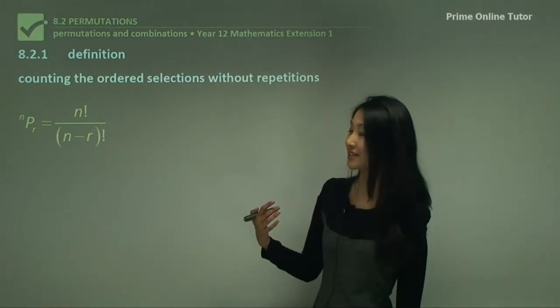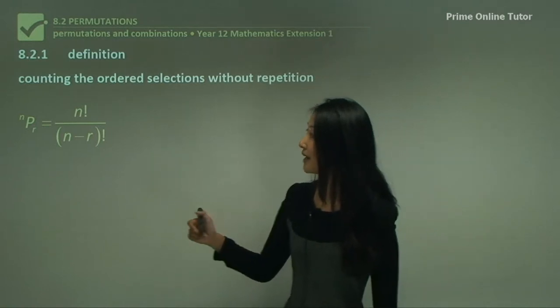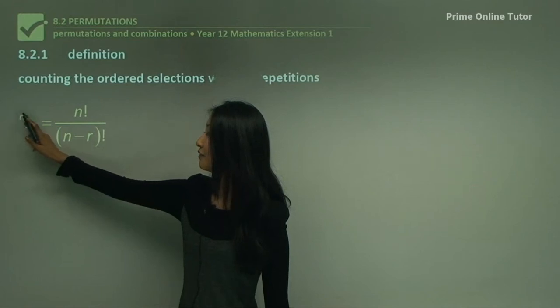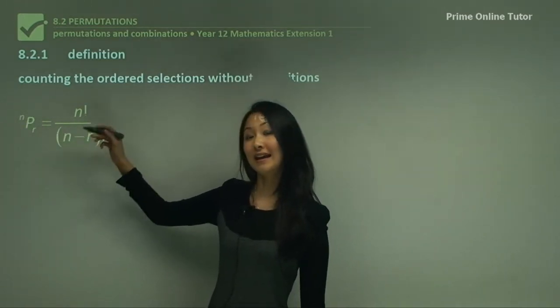Permutations can be expressed in two ways. Here we have ⁿPᵣ with P standing for permutations, n for the number of elements, and r for that which is counted.